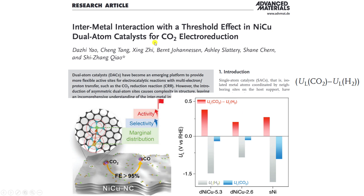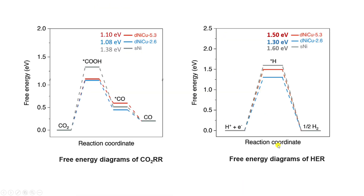This is a paper published in Advanced Materials. In this paper they used three kinds of catalyst: NiCu 5.3, NiCu 2.6, and a single nickel atom catalyst. They used these three catalysts to study CO2 reduction and hydrogen evolution reactions. The bottom profile is the limiting potential profile and the top one is the selectivity potential profile.